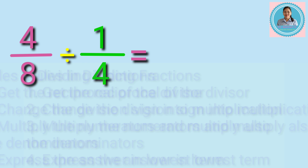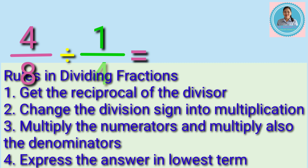Here are the rules in dividing fractions. Number one: get the reciprocal of the divisor. Number two: change the division sign into multiplication. Number three: multiply the numerators and multiply also the denominators. Number four: express the answer in lowest term.